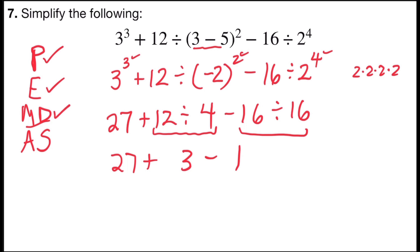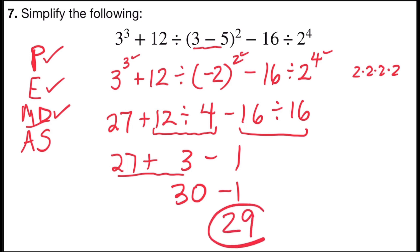Last step, I'll work addition and subtraction from left to right as I see them. 27 plus 3 is 30, and 30 minus 1 gives me my simplified answer of 29.